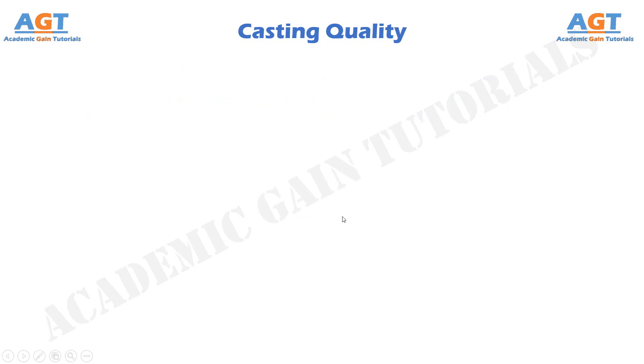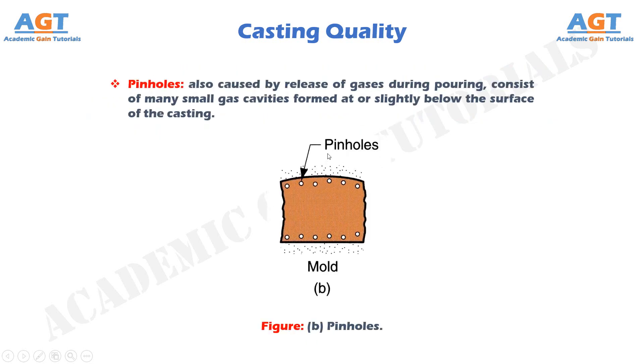Pinholes, which are also caused by release of gases during pouring, consist of many small gas cavities formed at or slightly below the surface of the casting.